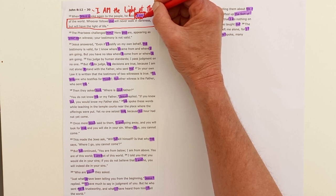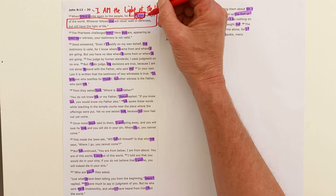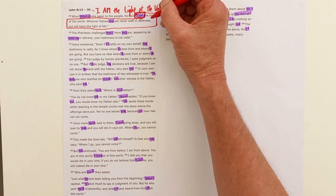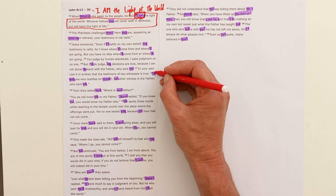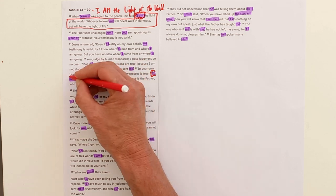We've seen it already in John chapter 6, and here is the second explicit 'I am' statement: 'I am the light of the world.' But we see this 'I am' language used by Jesus a number of times through this section.